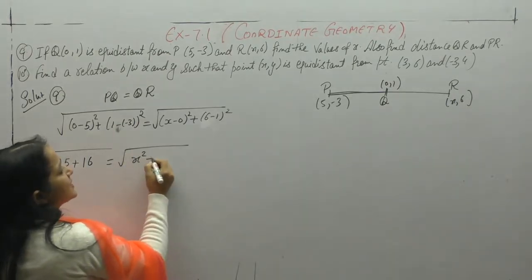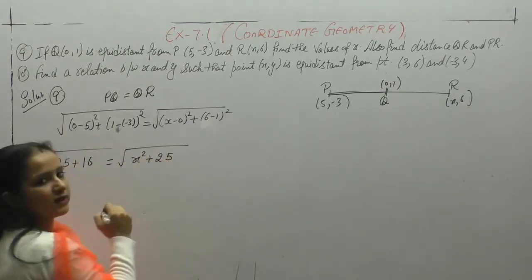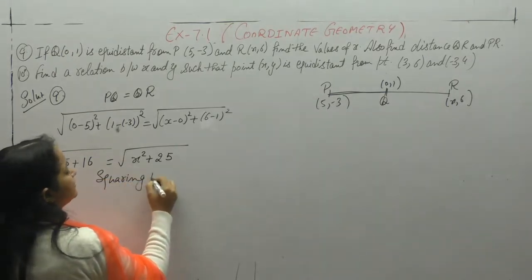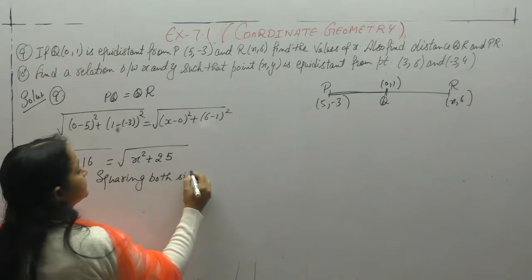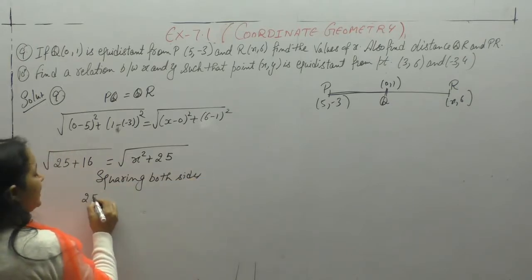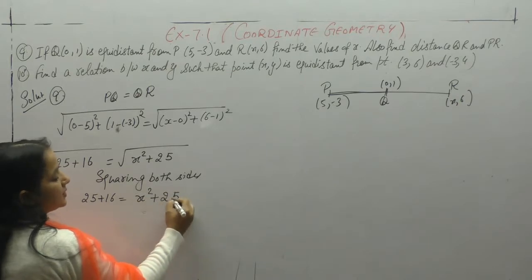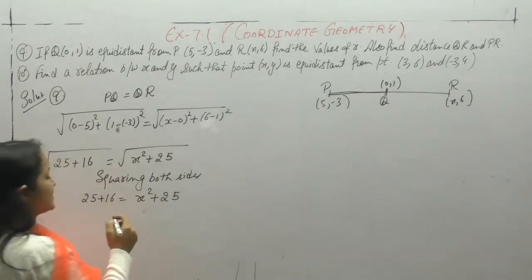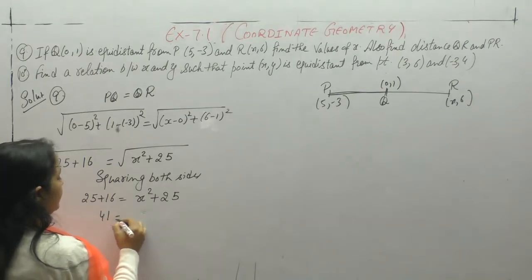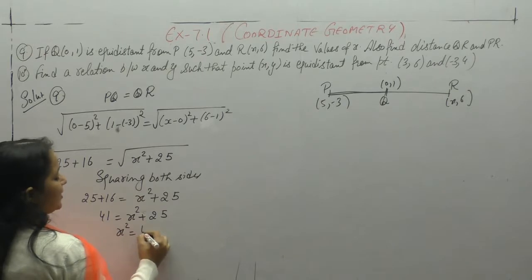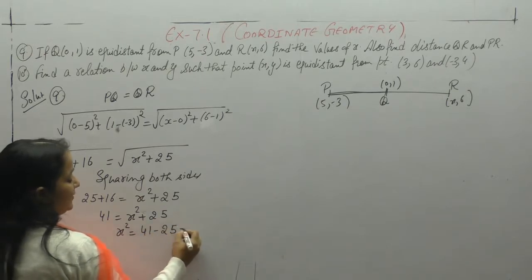x2 is 6 minus 1, 5 square is 25. Now squaring both sides, what we get: 25 plus 16, x squared plus 25. Squaring both sides, square root cancels. x squared plus 25, x squared equals 41 minus 25.